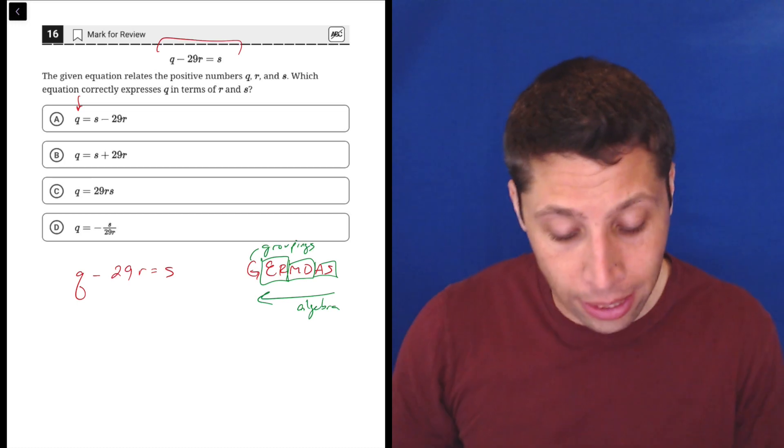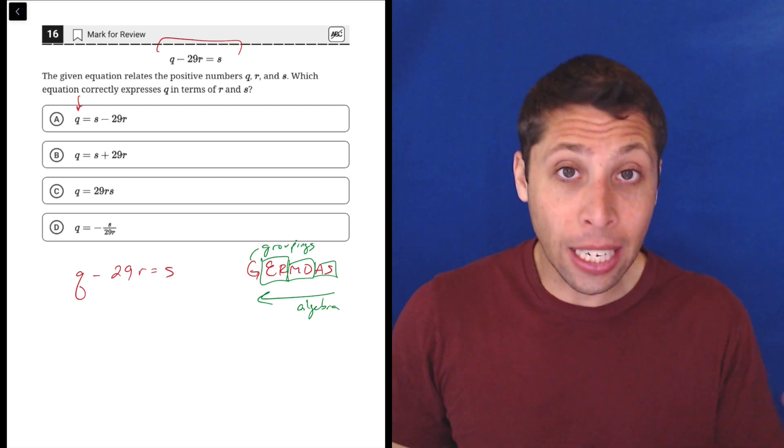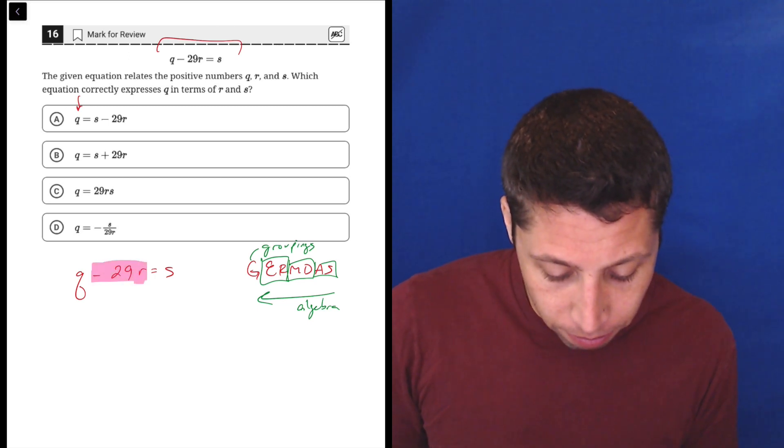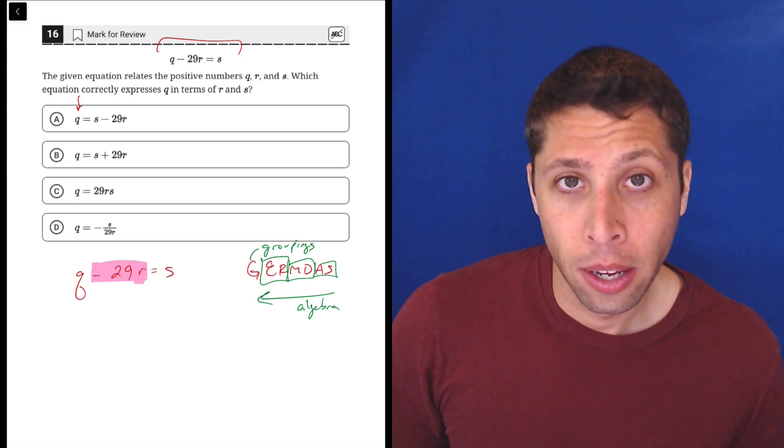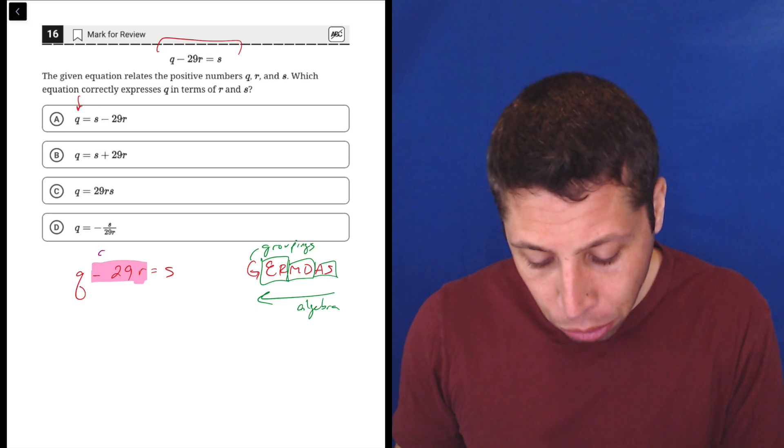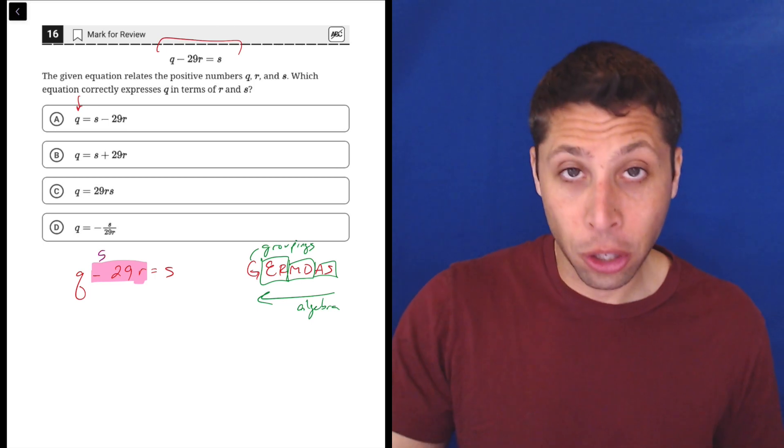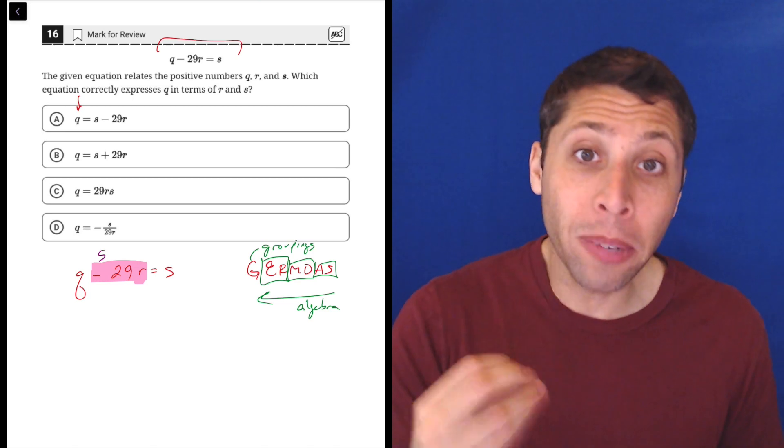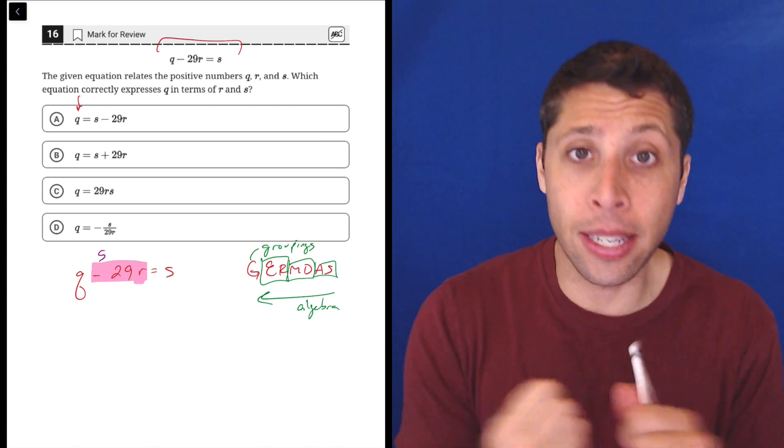If I want to get Q alone, I need to look and say okay what's getting in the way of Q right now? Well this whole thing here, negative 29R, is attached to my Q. How is it attached? It's attached through subtraction. It's Q minus 29R. So we need to move that away, and what GermDAS lets us do is it reminds us that everything is in opposites.